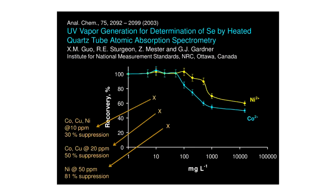The interesting thing about photochemical vapor generation is that it is more immune to classical interferences than chemical vapor generation. Here we see the immunity of vapor generation of selenium to the presence of nickel and cobalt at concentrations as high as 100 to 200 parts per million. In the literature, these interferences cause significant reduction of selenium generation with the classical tetrahydroborate reaction at much lower concentrations.